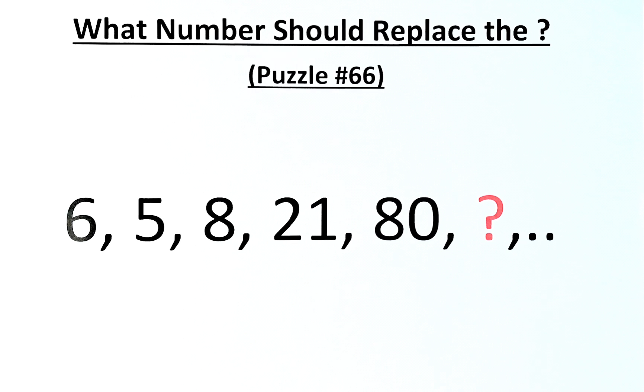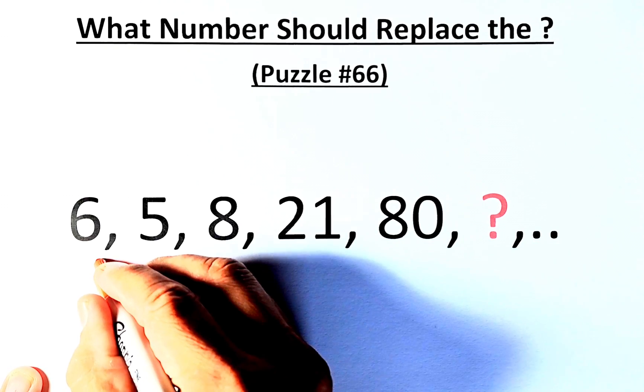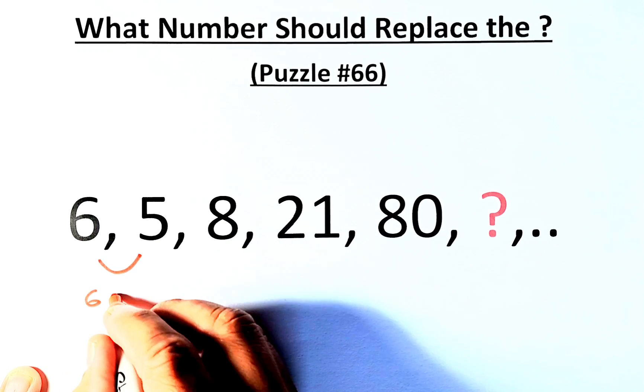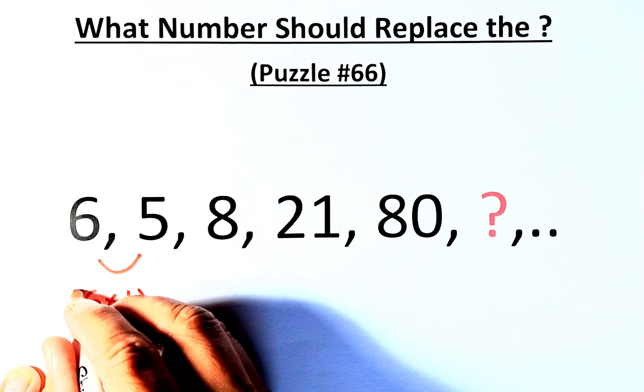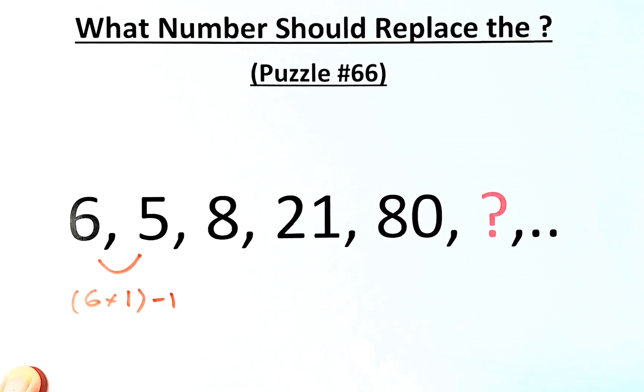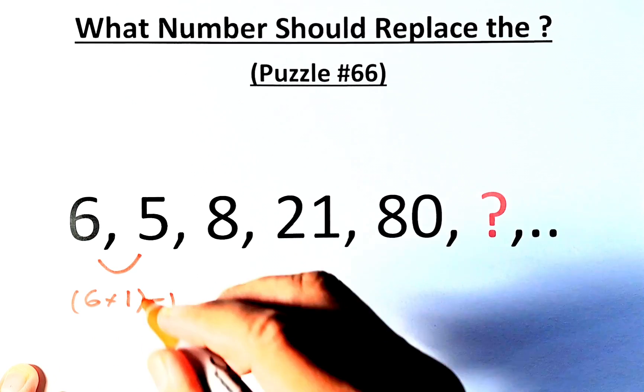If you can solve this puzzle, well done because this is quite an unusual puzzle. So to get 6 to 5, what we do is that we are just going to take 6, multiply by 1, and then you minus 1. 6 times 1 is 6, 6 minus 1 will give us 5.